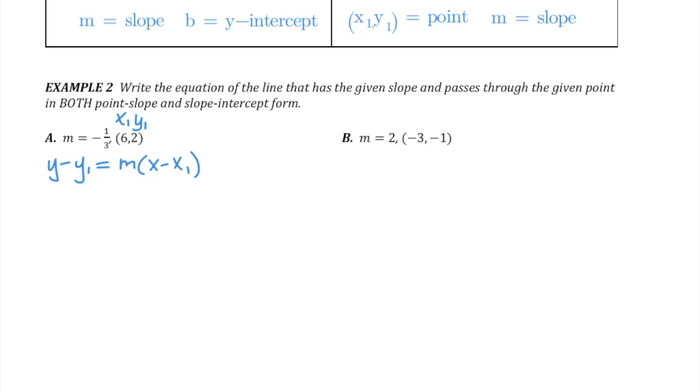Then I'm going to label on my point which coordinate is x1 and which one is y1. Now this is just a basic substitution problem. We're going to leave the plain y and the plain x in the equation as is. When we get to y1, we substitute the value of y1, which is 2. When we get to m, we substitute the value of m, which is negative 1 third.